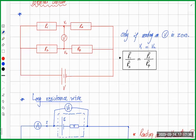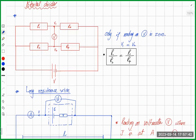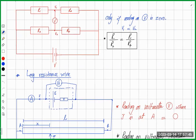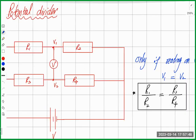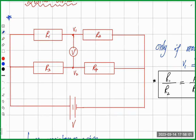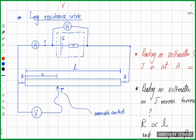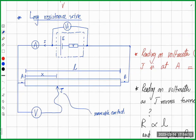In the previous class we were discussing the potential divider, and the same ratio case: if the voltmeter is showing no reading, it means the potential at V1 and the potential at V2 are the same. That can only happen if the ratio between R1 and R2 is exactly the same as the ratio between R3 and R4. Using this, we make this kind of circuit.